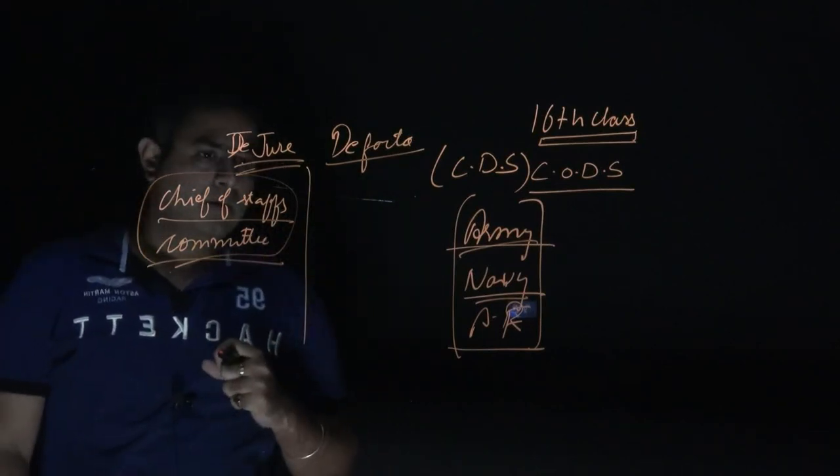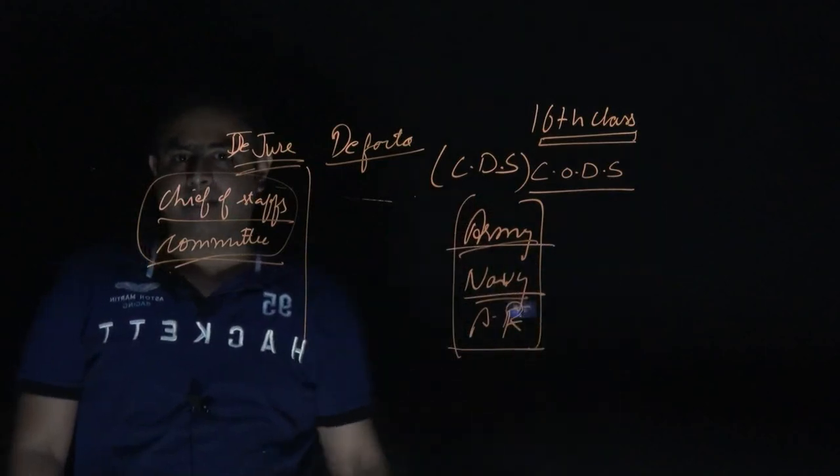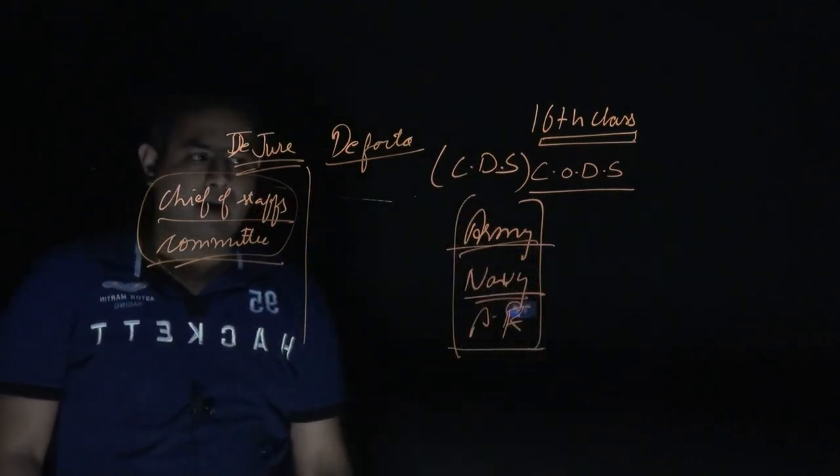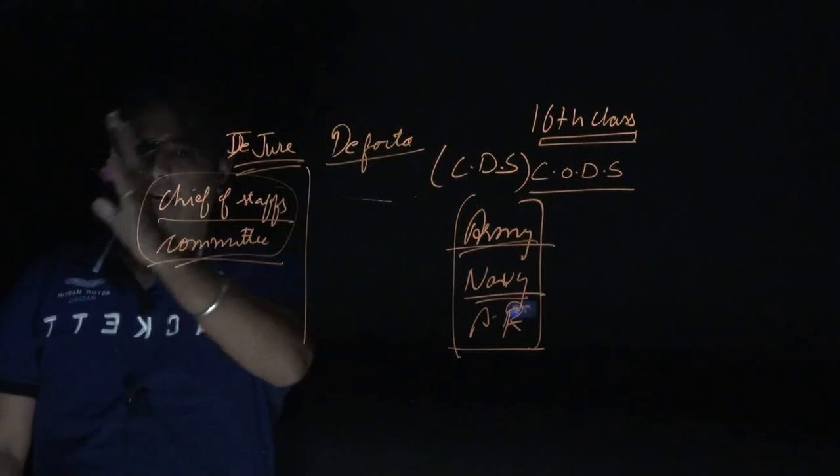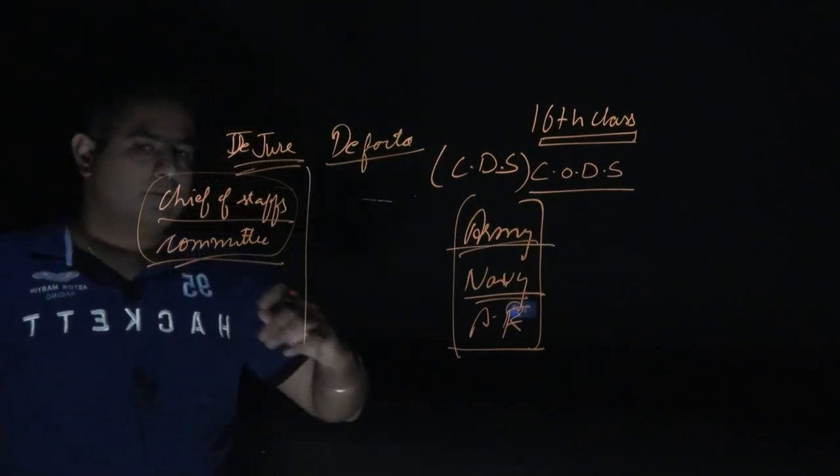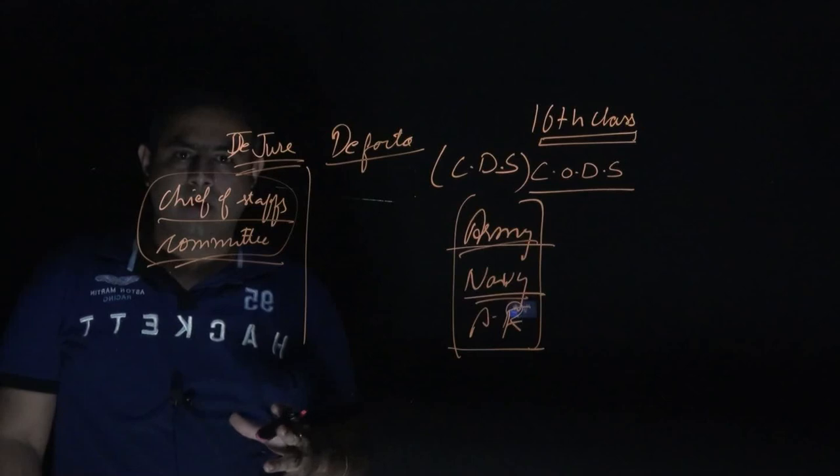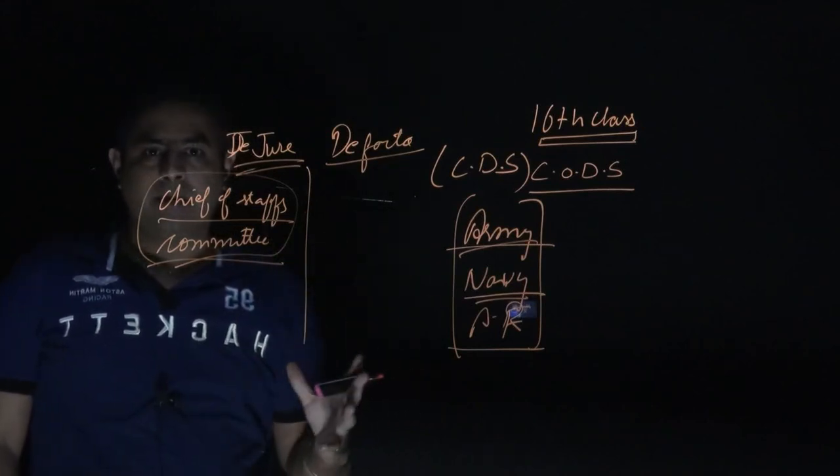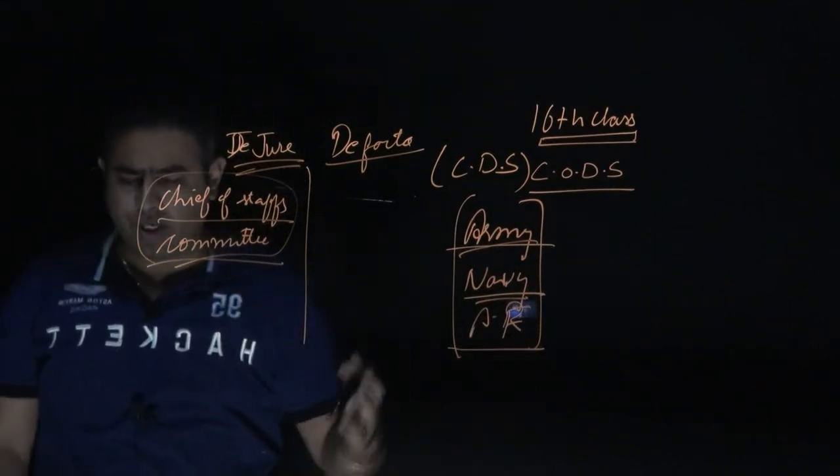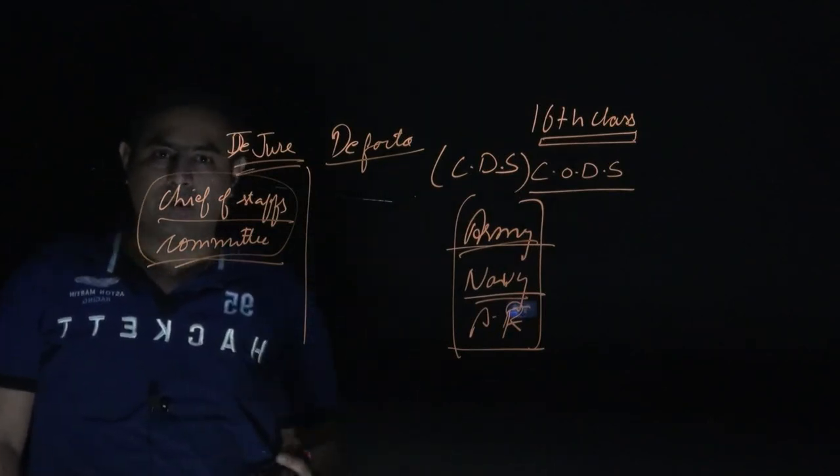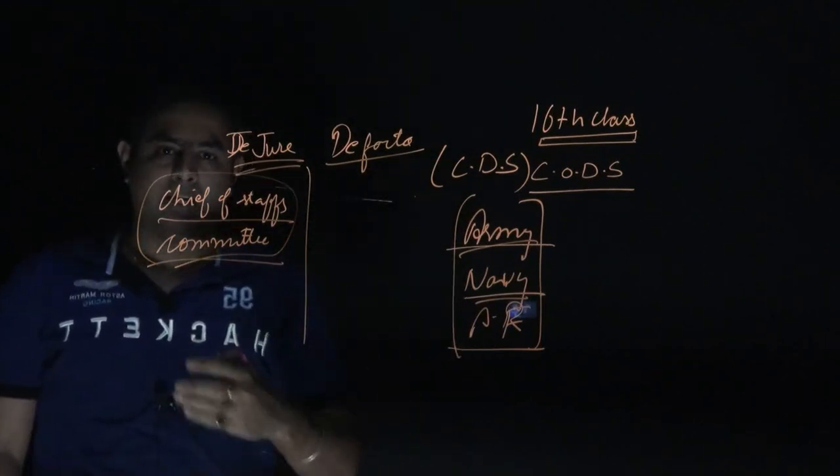What does India need? Our forces are divided into Army, Navy, and Air Force without an integrated approach where we can attack together against enemies. After the 1999 Kargil war, which we won, a Kargil Defense Committee was formed to determine how to win future wars. The biggest recommendation of the Kargil Defense Committee was to create a Chief of Defense Staff.